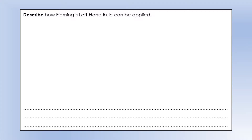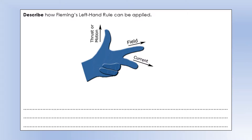We're going to continue looking at magnetic fields, specifically a rule we can use to determine the direction that a positive charge experiences a magnetic force. The rule is Fleming's Left Hand Rule. To use the rule, you set out your thumb and fingers in the way shown.